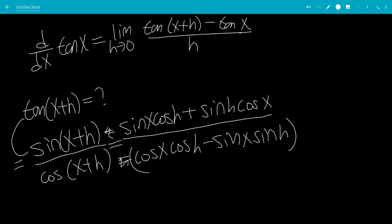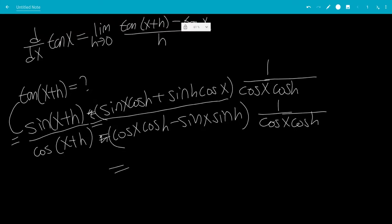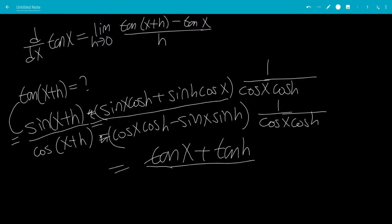We're going to multiply top and bottom by 1 over cosine x cosine h. On the top, this will just be tangent x plus tangent h, because the cosine h cancels in the first term and the cosine x cancels in the second term. On the bottom, cosine x cosine h times the reciprocal gives 1 minus tangent x tangent h, since sine x over cosine x is tangent x and sine h over cosine h is tangent h.